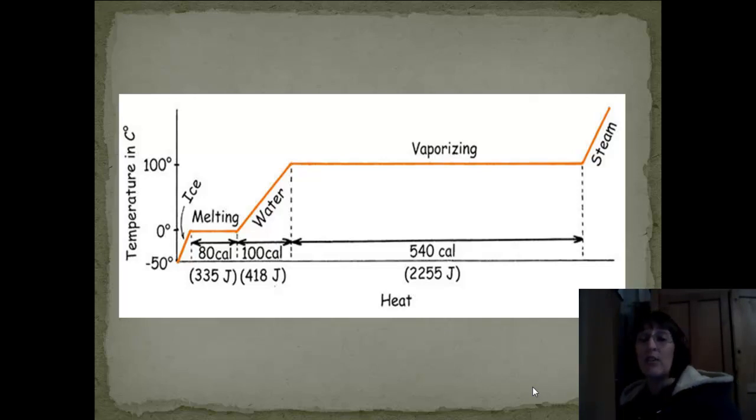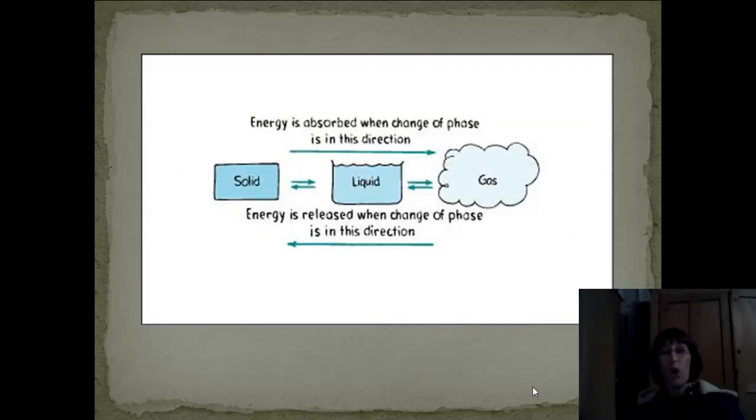Then once you've got it all changed to steam, it can get even hotter still. So while something is changing its state or changing its phase, it stays at that steady temperature. All the extra heat that you put into it goes to get it to change from a liquid to a gas faster. When you look at these changes of phase, here you have the solid, the liquid, the gas. If you're going from left to right on this picture, the solid, we have to give it energy. We have to take the ice, solid ice, and give it heat in order for it to warm up to a liquid. So the energy is absorbed.